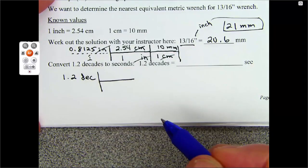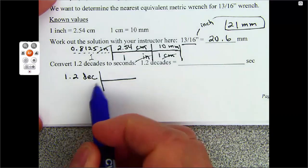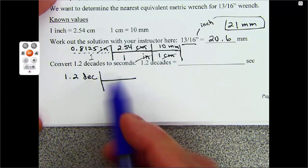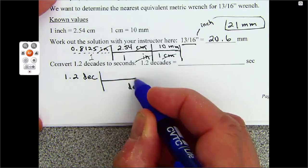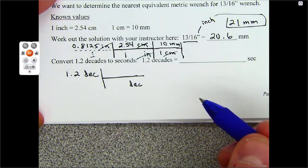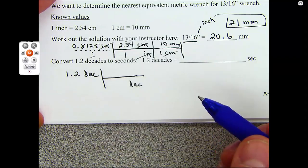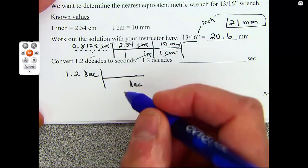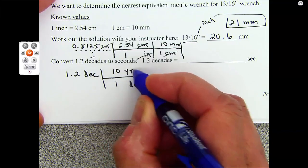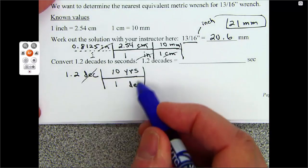What do we got here? 1.2 decades. I'm going to put a conversion H down here. If I have decades here, I know I'm going to put decades down here. What's a conversion you know for decades? Hopefully there's only one you know. One decade is 10 years. Decades are going to cancel out.